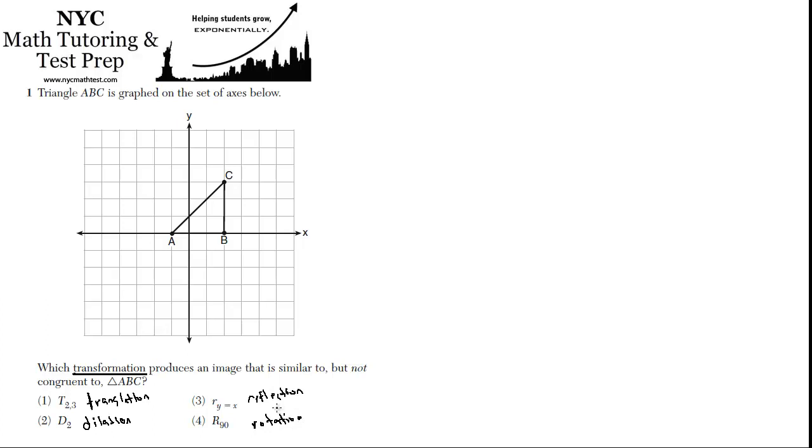And they want to know which of these produces an image that is similar to, but not congruent to. So let's think about each of these. In a translation, if you take this triangle and you move it up or down or left to right, it's still going to be the same triangle. It's still going to be congruent to the way it was originally. So it's not translation.